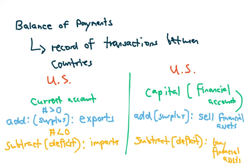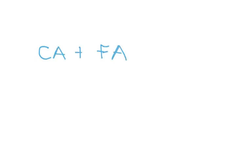One incredibly important thing to know about the current and capital accounts: the current account plus the financial account have to add up to zero. Which means one will always be in surplus and one will always be in deficit. Which one is in surplus and which is in deficit can change over time, but at any one point in time, one account has to be surplus and the other has to be deficit.